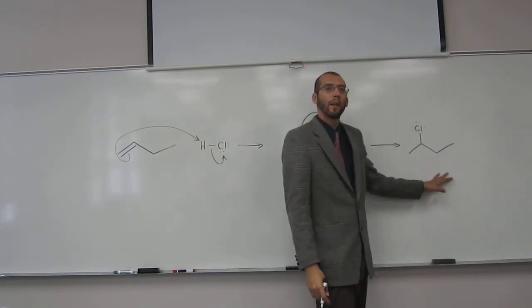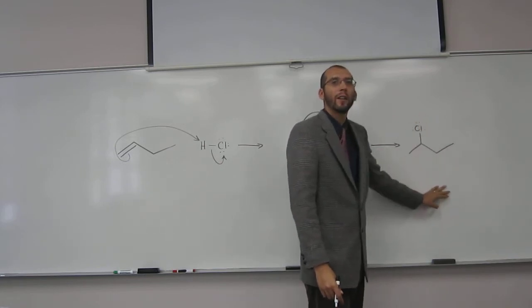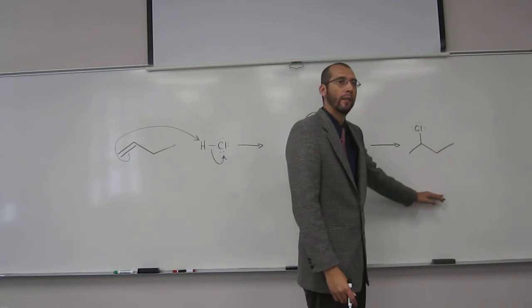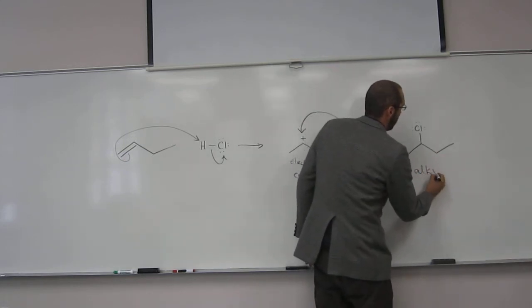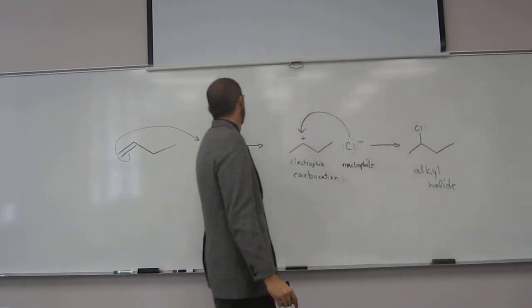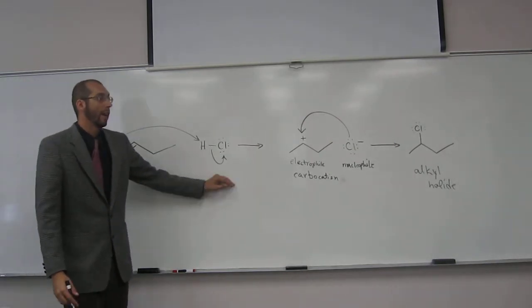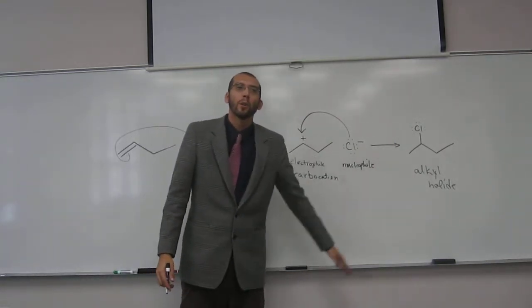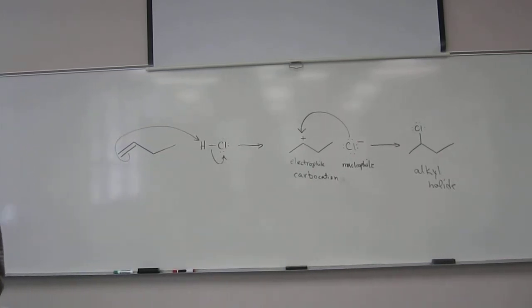This thing here has a functional group in it. You see the chlorine? We call these alkyl halides. This is a way to make alkyl halides. So you can take an alkene, react it with HCl, and you can make an alkyl chloride.